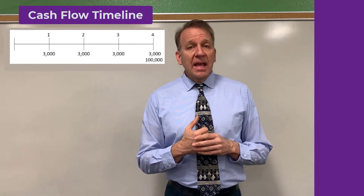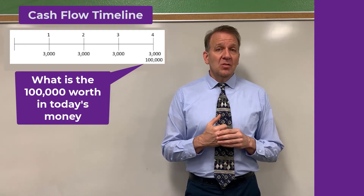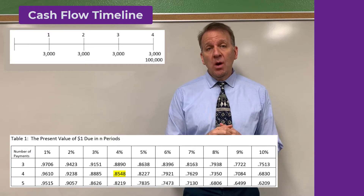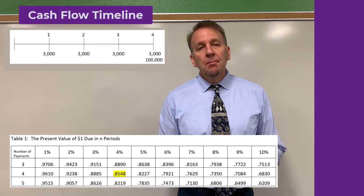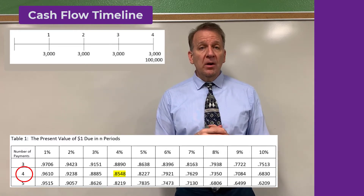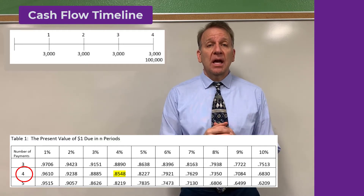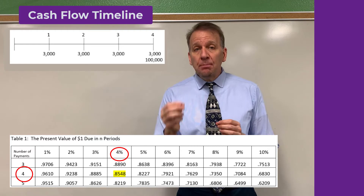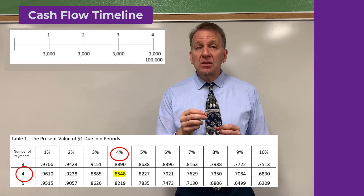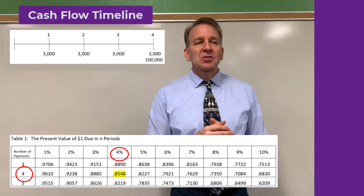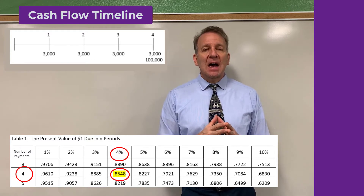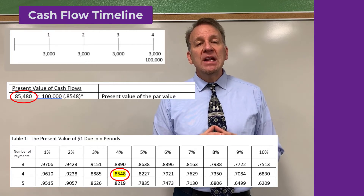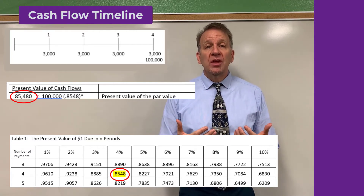Let's discount the $100,000 back to the present. We need to go to the present value of a single dollar amount table — in my example, this is Table 1, which you can see here on your screen. I go down at four periods because the $100,000 is out for four periods on our timeline, and then across at 4%. That's the market rate — remember, the market rate was 8%, but they're paying it out semi-annually, so we cut that interest rate in half from 8% down to 4%. The factor then is 0.8548 times $100,000, which gets us a value of $85,480. So that's what our bond value is worth in today's dollars.